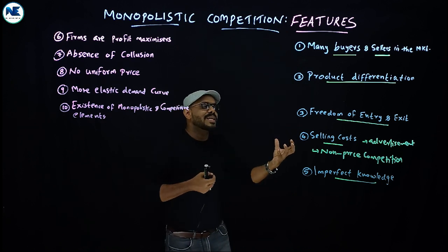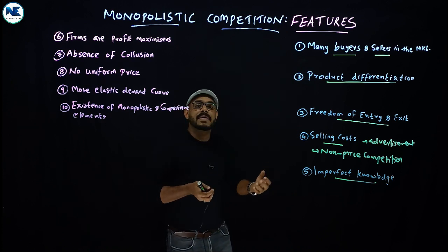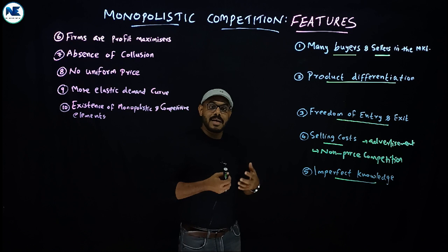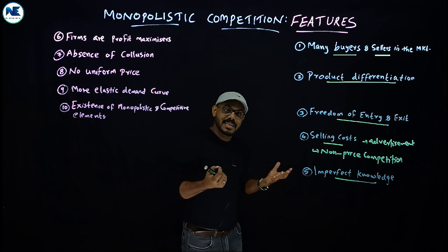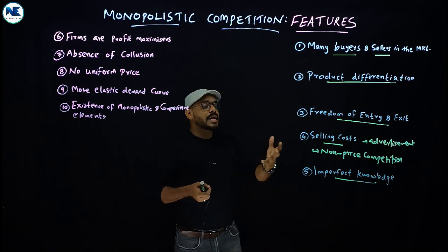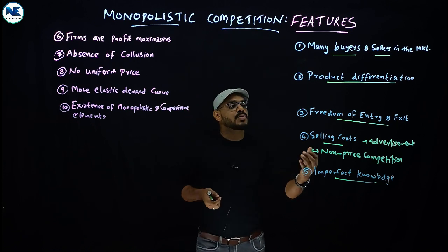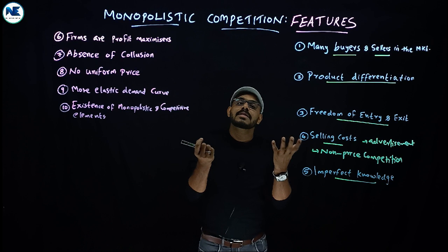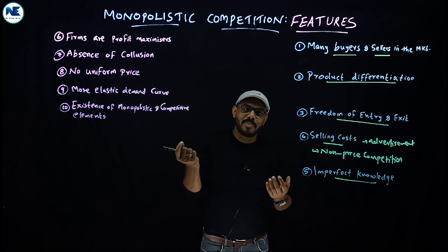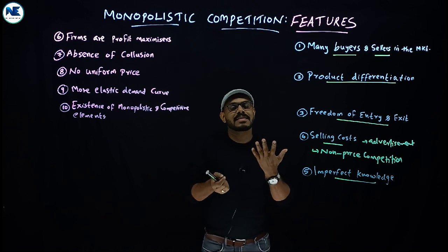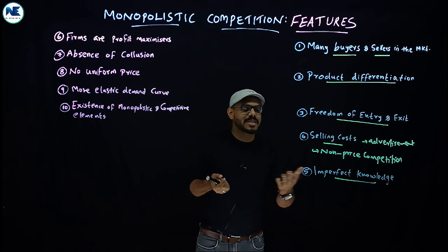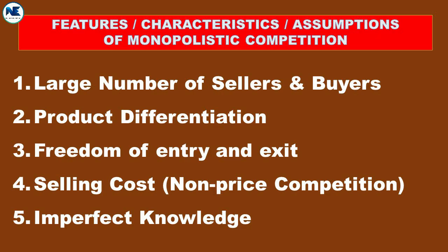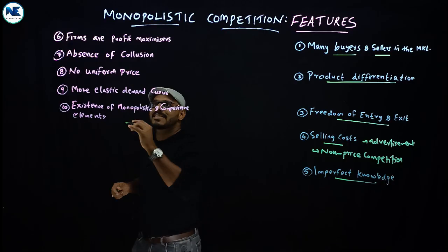To attract customers, firms spend on advertisement and other costs. Unlike monopoly with a single seller, monopolistic competition has multiple sellers, and customers must navigate the imperfect information to choose among them.